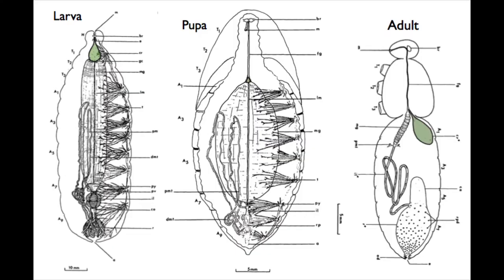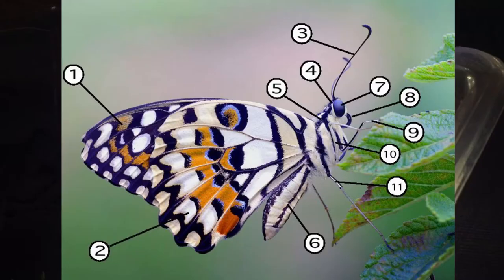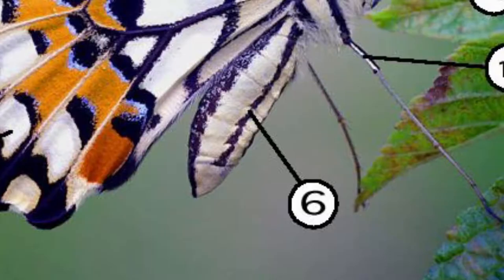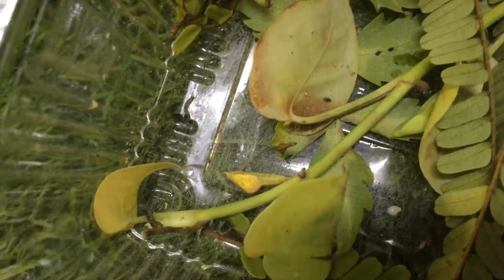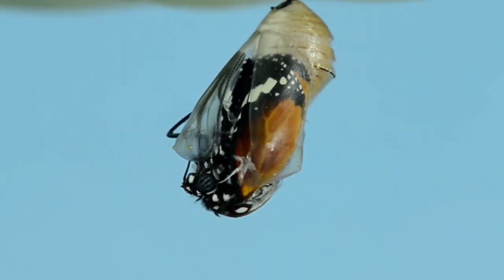Inside the pupa, the caterpillar's muscles dissolve to make new ones. The caterpillar undergoes a massive change, getting longer antennae and legs, reproductive organs and wings. The butterfly finally emerges from the pupa, pushing itself out.